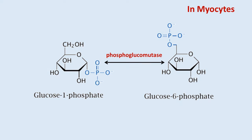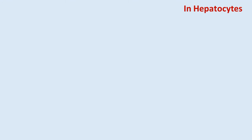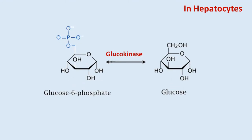In order to be used in metabolism, glucose-1-phosphate must be converted to glucose-6-phosphate by the enzyme phosphoglucomutase in muscle. But in liver, glucose-6-phosphatase can convert glucose-6-phosphate into free glucose, which is then released into the bloodstream to raise blood glucose levels.